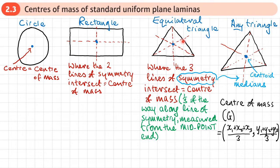The center of mass always happens to be one third of the way along the line of symmetry measured from the midpoint end, or equivalently two thirds along the length of that line from the vertex end. So one third from the midpoint end, two thirds from the vertex — and we can apply this to any triangle.